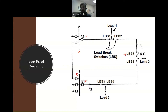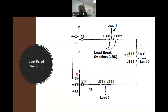Load 1 is connected to bus A, and load 2 and load 3 are connected to bus B. Although the system looks like a ring system, it is not a closed ring — it is an open ring. Switch LBS3 is the one that opens the ring system.